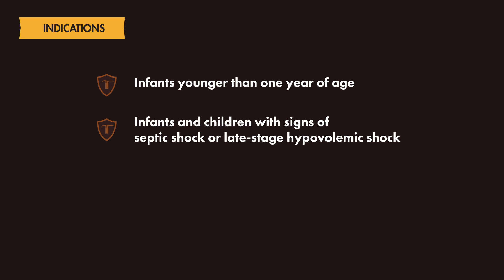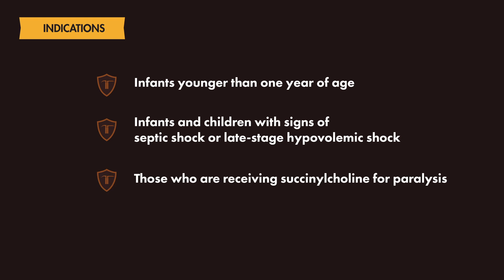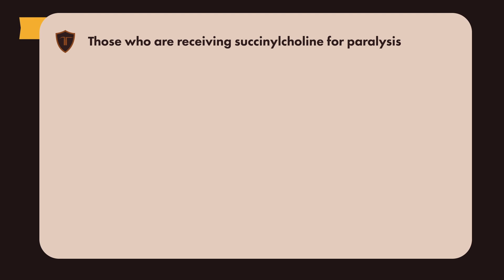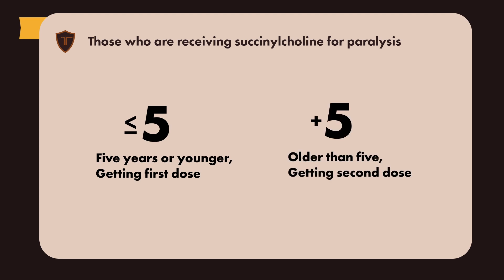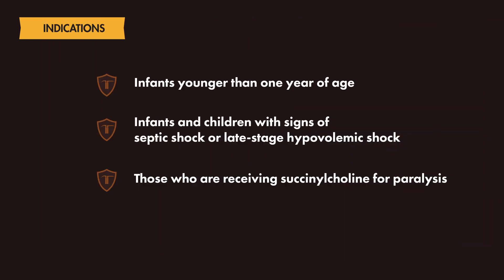Finally, the last scenario to consider atropine includes those receiving succinylcholine for paralysis — specifically, in infants and children 5 years of age or younger, or in children older than 5 years who are receiving a second dose of succinylcholine. The use of succinylcholine has been associated with bradycardia and asystole in children, so according to the American Heart Association, you may consider atropine in these cases to help counteract these effects.